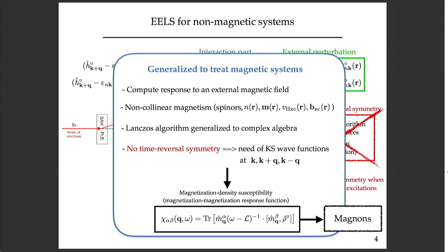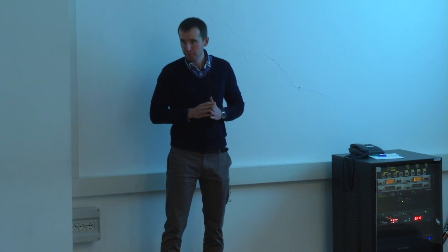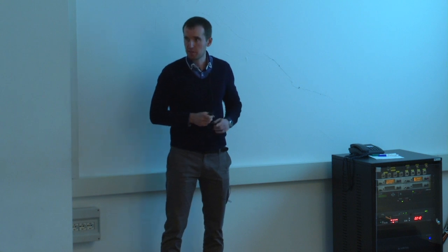In this way, we can compute the magnetization density susceptibility, which is the magnetization-magnetization response function, chi of alpha and beta. Alpha and beta are Cartesian indices. The expression for the response function is similar to the EELS case, but now we have magnetization densities instead of charge densities. We can also compute the mixed terms, like charge density-magnetization density and vice versa. But in this case, let me just talk about magnetization density susceptibility. Just by plotting this chi function, we can see peaks in the spectra. Some peaks are magnons, and other peaks are Stoner peaks, which are single spin flips.